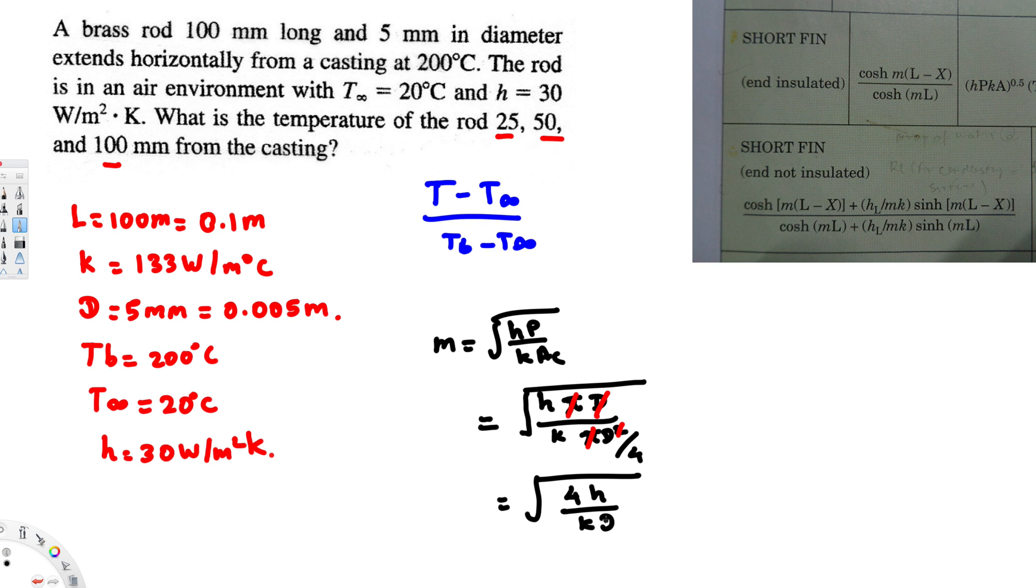Now let's plug these values: 4 times heat transfer coefficient, that's 30, over thermal conductivity of brass, 133, times diameter 0.005. If you calculate this, you should get around 13.43 meters to the minus one.